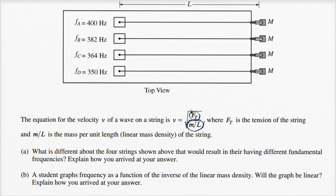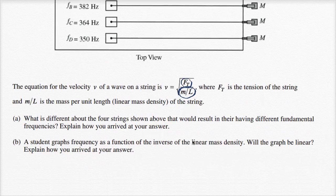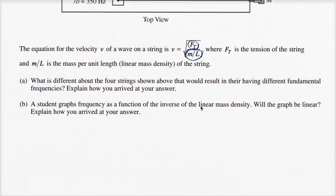They ask: what is the difference about the four strings that results in different fundamental frequencies? Explain how you arrive at your answer. And for Part B, a student graphs frequency as a function of the inverse of the linear mass density — will the graph be linear? Explain.